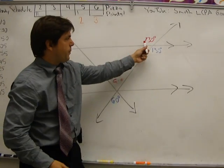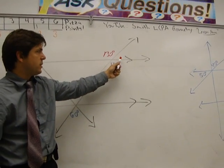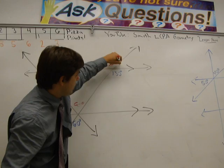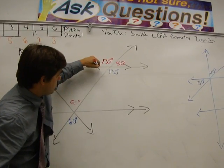Now we can do linear pairs here because these are two angles that form a line. So if this one's 130, this one has to be 50, and this one has to be 50.